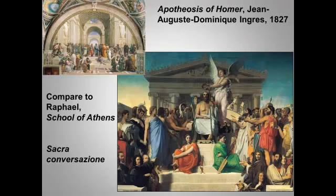Meanwhile, back in France, Neoclassicism lived on in David's most famous student, Ingres. This canvas is nearly 17 feet long, a truly monumental work intended to awe and impress visitors to the French Academy. Like Raphael's School of Athens, on which it's clearly based, Ingres's painting is a Sacra Conversazione — a conversation between figures from different times — a term you should probably know.